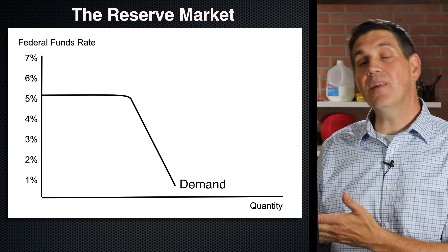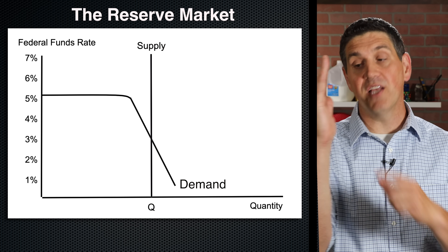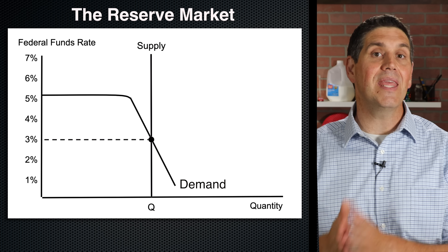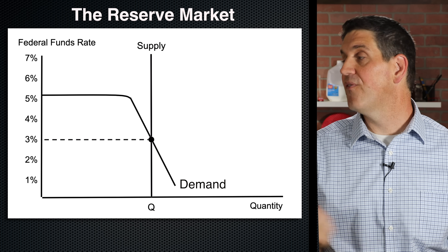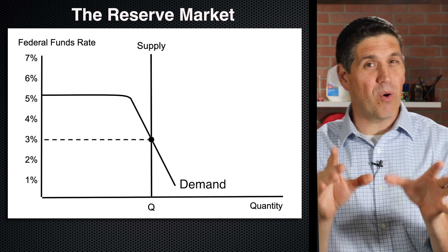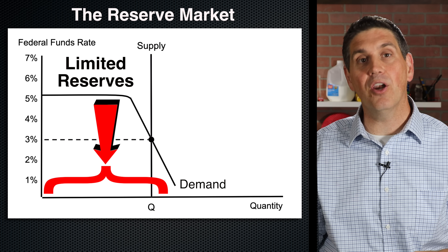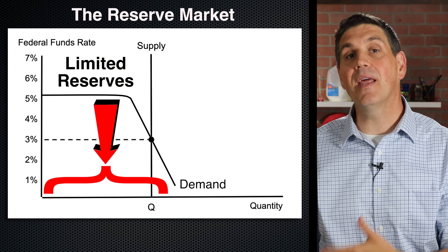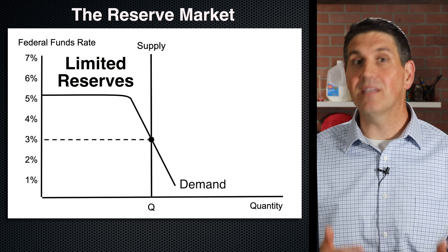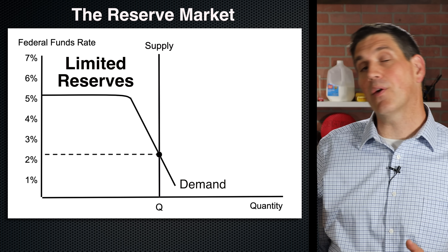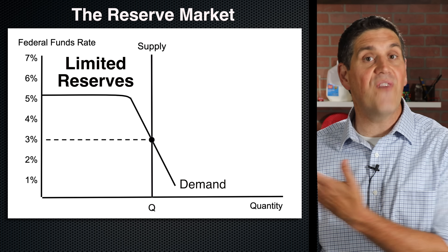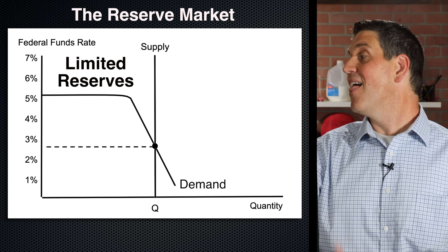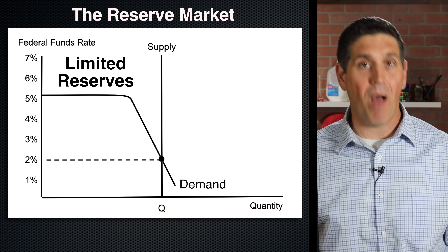So now we have the demand, and the supply of reserves is vertical because it's set by the central bank. Those come together and give you the equilibrium federal funds rate. When the supply is over here, that shows you a banking system with limited reserves. An increase or decrease in the money supply would increase or decrease reserves, and that would change the federal funds rate, affecting interest rates in the overall economy. That's textbook monetary policy.